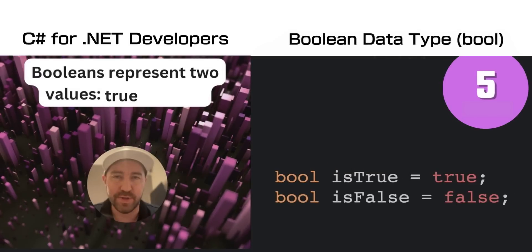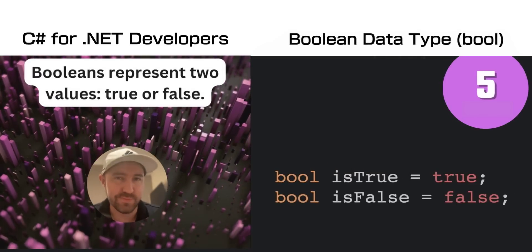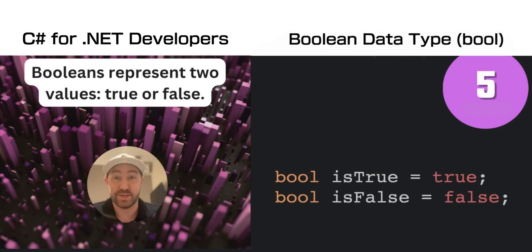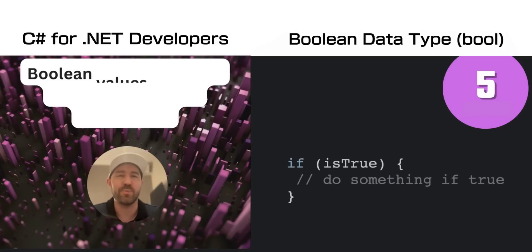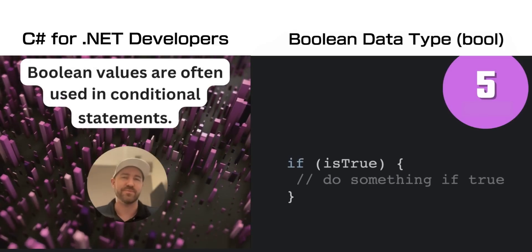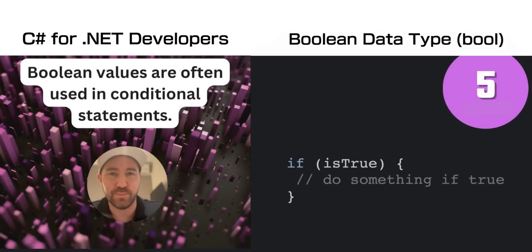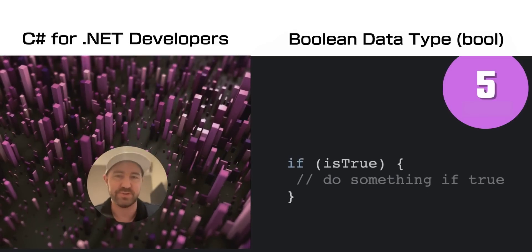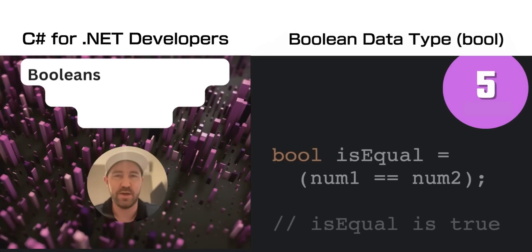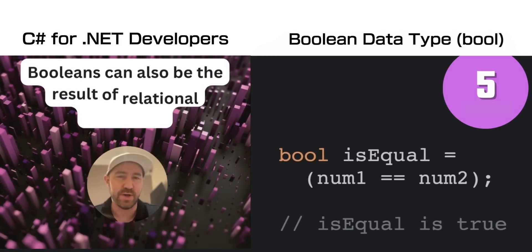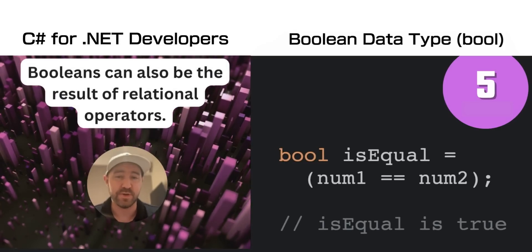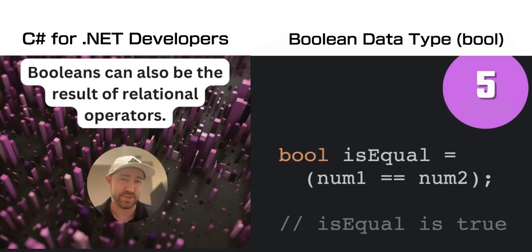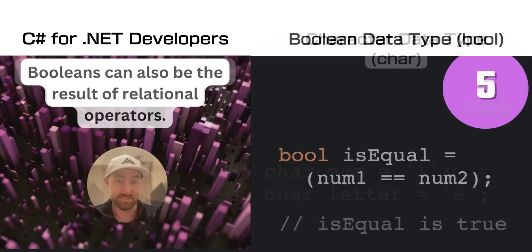The boolean data type, or bool, represents true or false — yes or no. Normally you would use them for conditional branching, such as if something is true, do this. You can also get a boolean as a result of a conditional operator, such as number one equals number two.